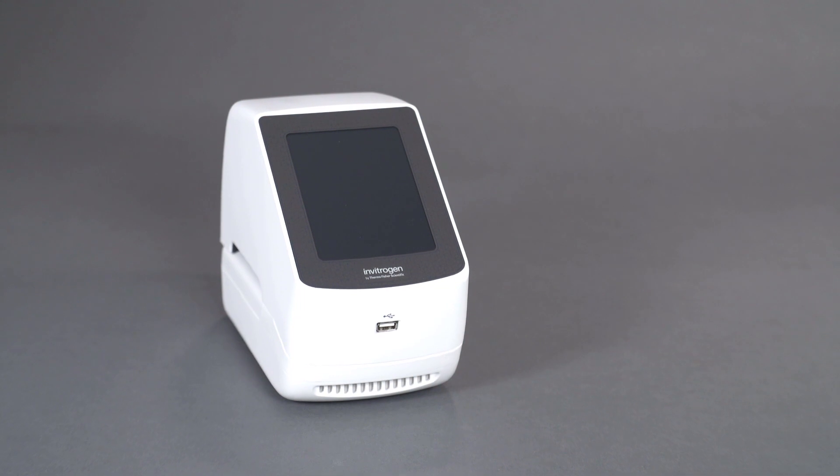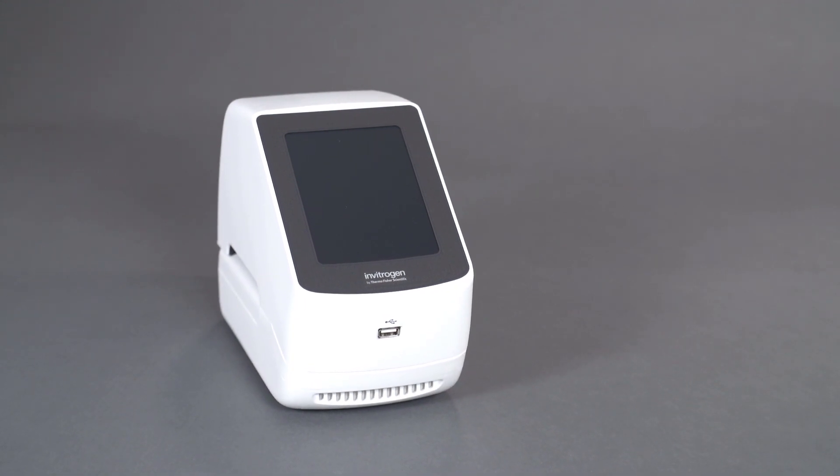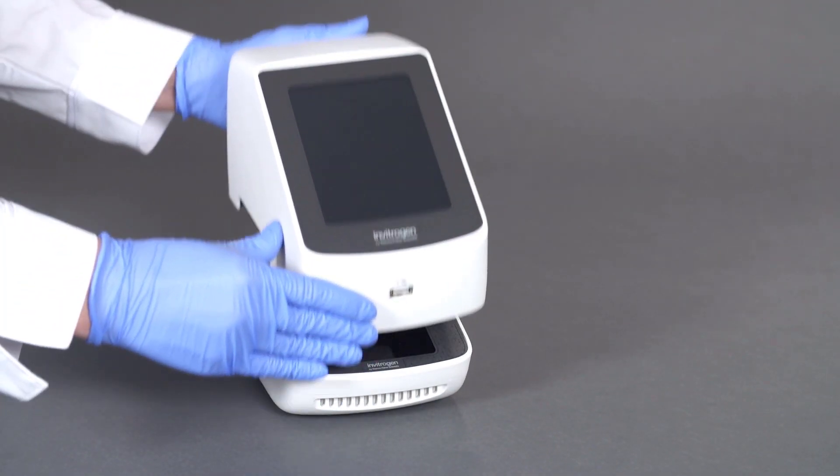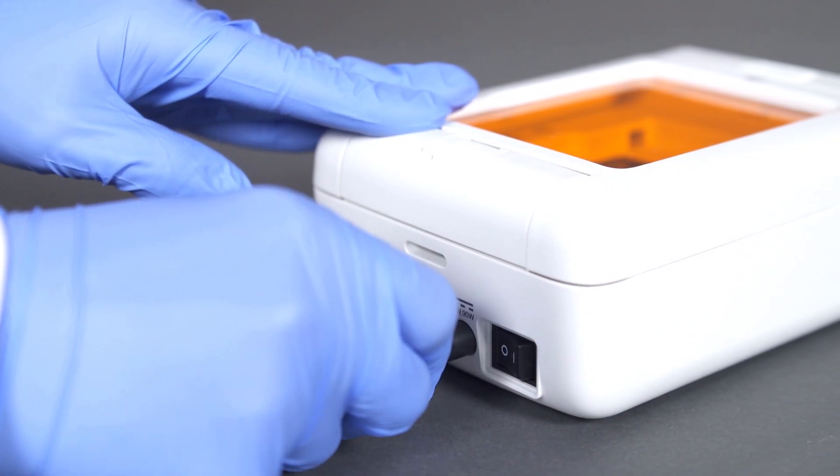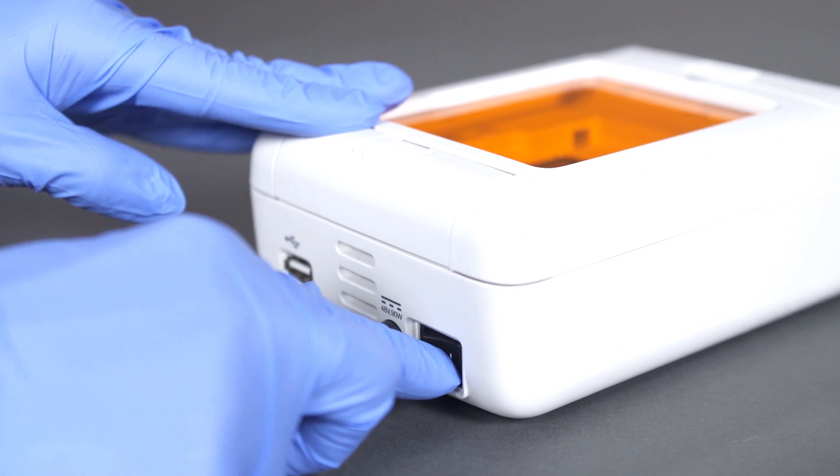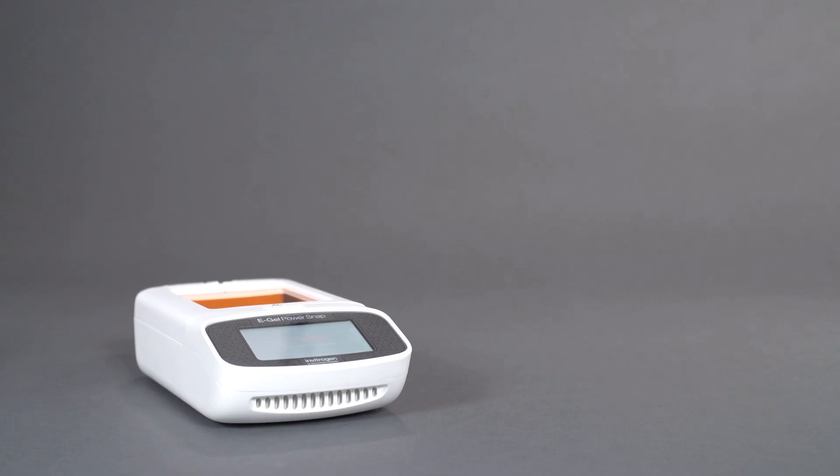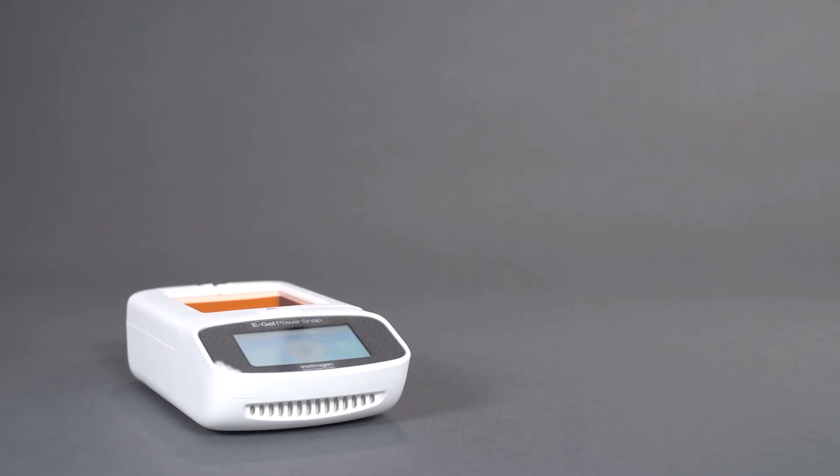The eGEL PowerSnap electrophoresis system comprises the PowerSnap camera hood and PowerSnap device. The eGEL PowerSnap electrophoresis system is designed to run all standard throughput eGEL cassettes, including eGEL eXGELs for rapid analysis.